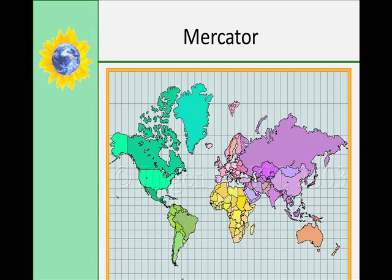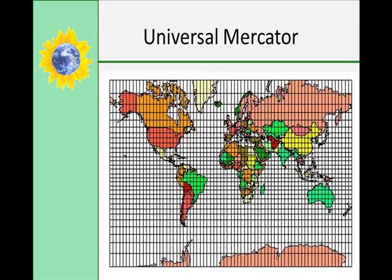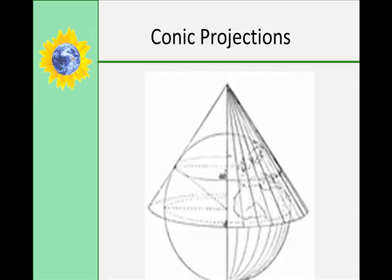A Mercator projection, which is the one most people are familiar with, emphasizes the exaggerations in the high latitudes. This is partly because fewer people live there — it's quite egocentric, as Europe and America are more accurate while areas farther from those regions are less accurate. The Universal Transverse Mercator (UTM) defines horizontal positions in six-degree zones, each with a central meridian, combining 60 different cylindrical projections into one to achieve greater accuracy.